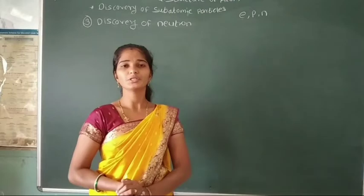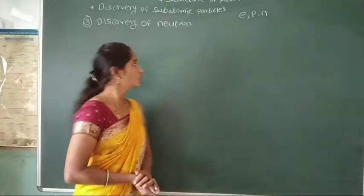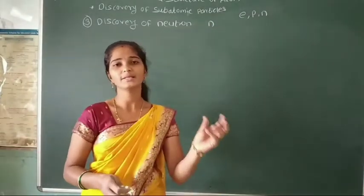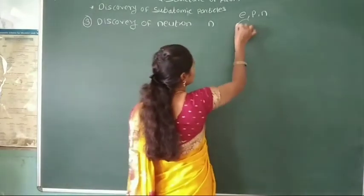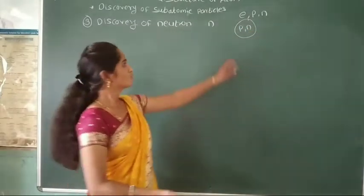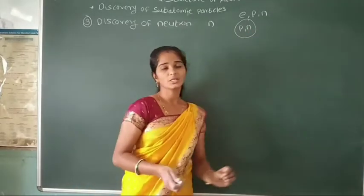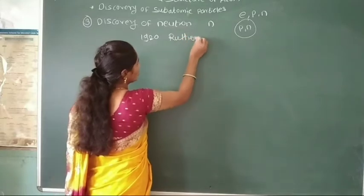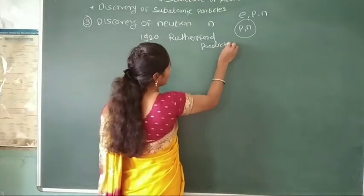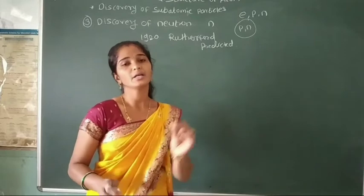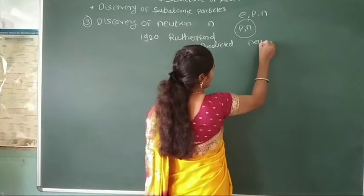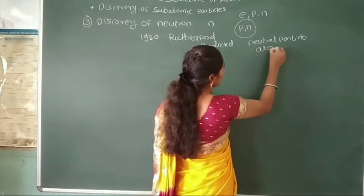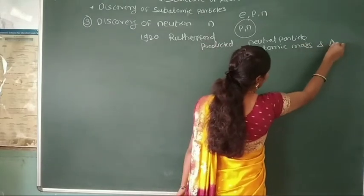Now we see the third discovery — the discovery of neutrons. We know that the neutron is present inside the nucleus along with the proton. That means the nucleus is composed of both protons and neutrons. The proton is a positively charged particle, while the neutron is a chargeless particle. In 1920, Rutherford predicted the presence of neutral particles inside the atom.